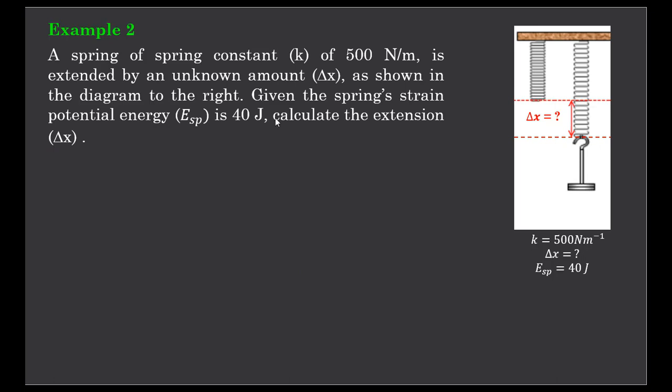Example number two. We now have a spring of known constant of 500 newton per meter, extended by an unknown amount delta x as shown in this diagram. Given that the spring strain potential energy is 40 joules, calculate the extension.